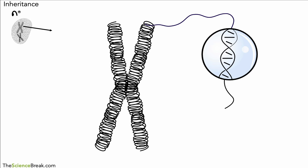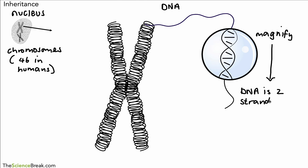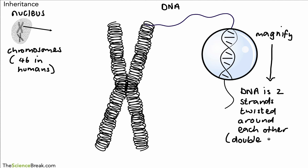We've got our nucleus on the left-hand side with chromosomes inside. In the cells of humans there are 46 chromosomes — actually 23 pairs, which makes a total of 46. We can see the chromosome is made of DNA. Magnifying the DNA many times, you'll see that DNA is actually made of two strands twisted around each other. We give that structure a name — this is called the double helix. DNA is described as having a double helix structure.